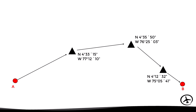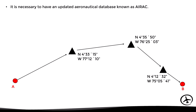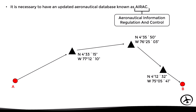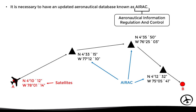Let's see a practical example. Suppose an aircraft wants to fly from airport A to airport B, using a route that passes through waypoints determined by certain geographic coordinates. In this case, it is necessary to have an updated aeronautical database known as AIRAC, which stands for Aeronautical Information Regulation and Control. This database contains the geographic coordinates of each airfield, NAVAID, and waypoint to be used for air navigation. The GNSS equipment will determine the aircraft's current position and allow it to navigate to the waypoints defined in the route. And basically that's how satellite navigation works.